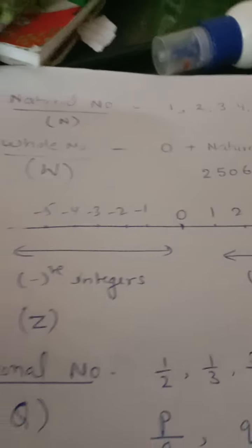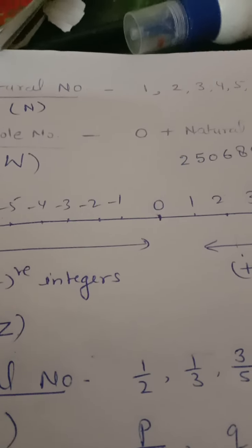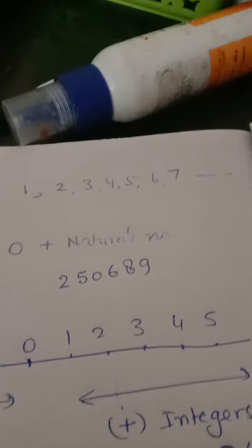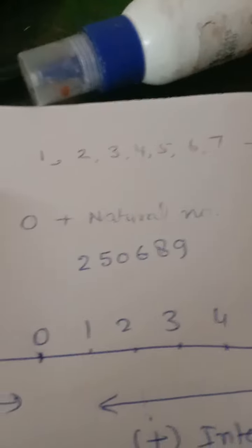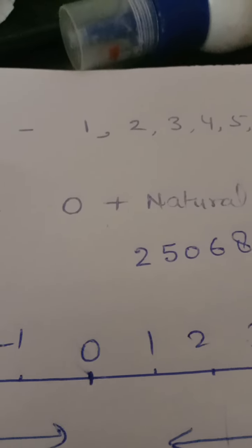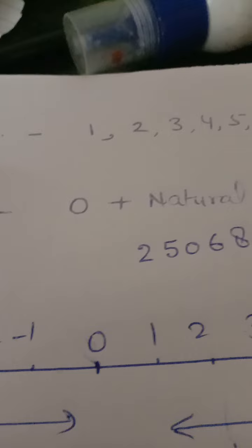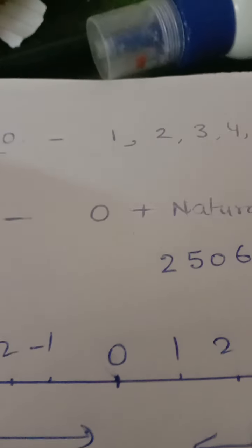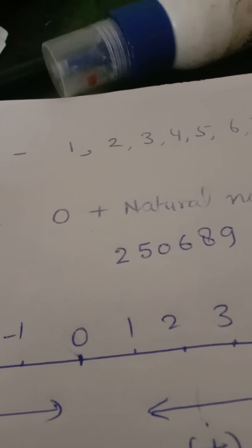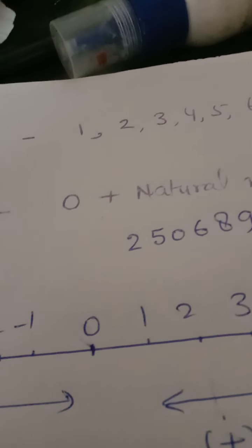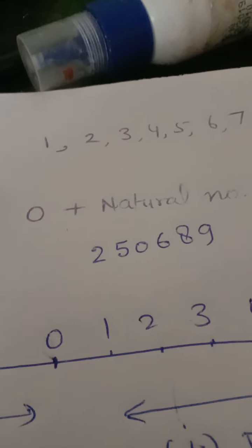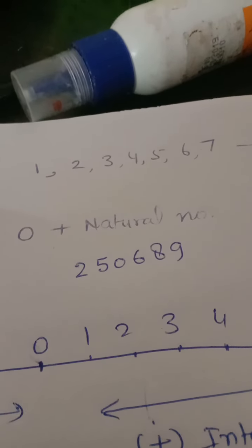Hello friends, today I am going to teach you the number system. First I will show you natural numbers. Natural numbers are 1, 2, 3, 4, 5, 6, 7, 8, 9, 10 and so on. If I say tell me counting, you will start from 1, 2, 3, 4, 5 and so on. Everyone will start counting from one — that's why we call it natural number, because it comes naturally.